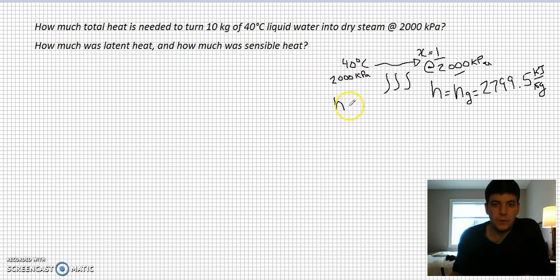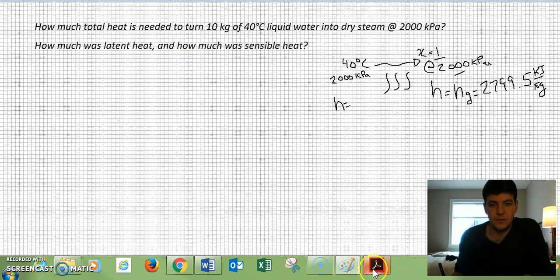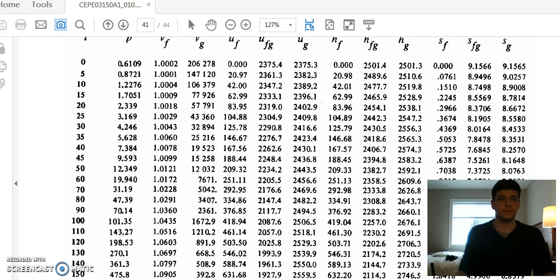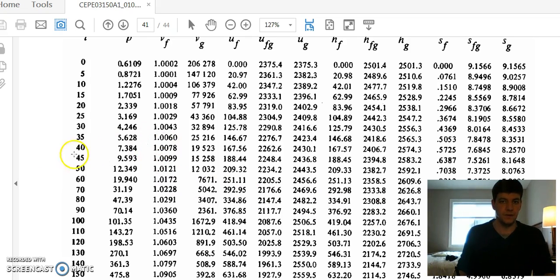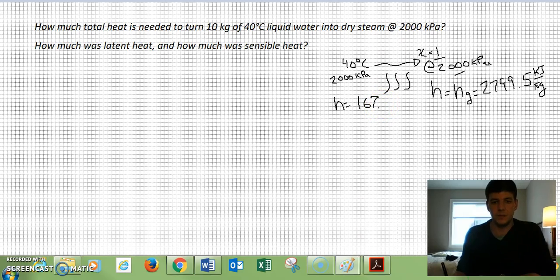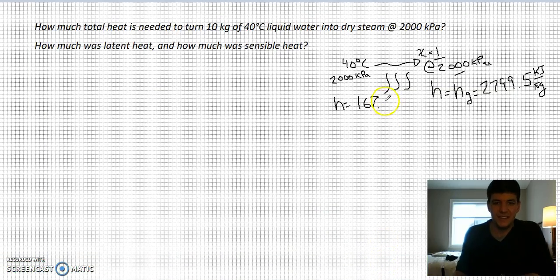For liquid water, I'm going to go to my temperature table to find my value at 40 degrees. I'm going to come down to my temperature table, 40 degrees, and I want to find my HF value. 167.57 is my HF value, which is kilojoules per kilogram.